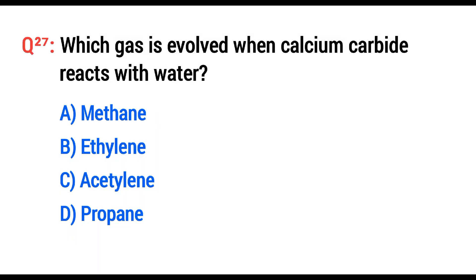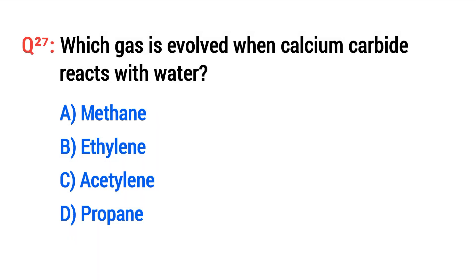Question twenty-seven: Which gas is evolved when calcium carbide reacts with water? The right option is C: Acetylene.